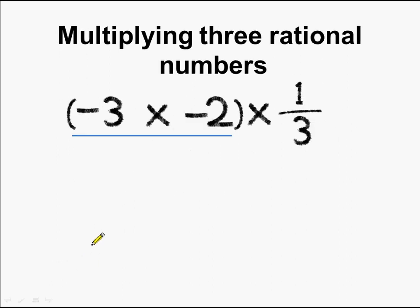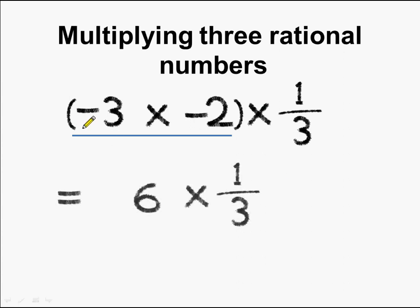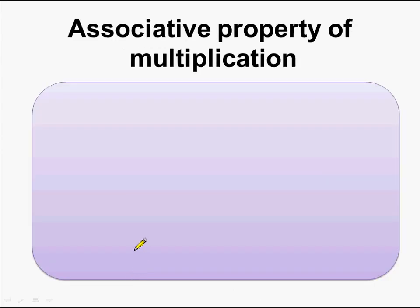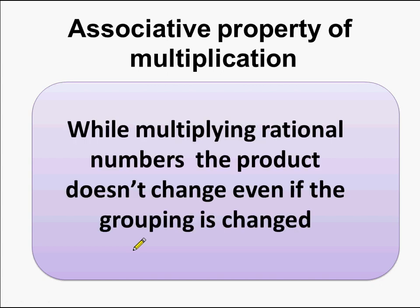Now let's change the group. We first multiply minus 3 with minus 2, which gives 6 (minus times minus is plus, and 3 times 2 is 6). Then we multiply by 1/3: 6 divided by 3 gives 2. In both cases we got the same answer, so in multiplication of rational numbers the product doesn't change even if the grouping is changed. The associative property of multiplication holds true for rational numbers.